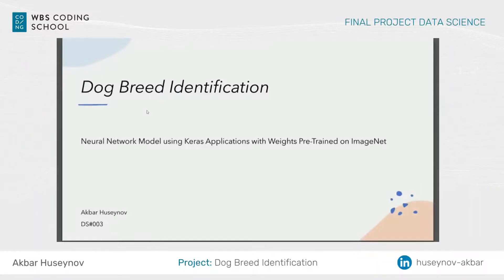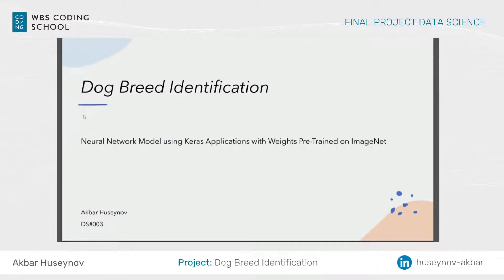My final project is a machine learning and image recognition project using convolutional neural networks. The idea behind it is by providing data to teach a machine to recognize anything on newly inputted images. For the project I chose to work on a Kaggle dataset for dog image recognition and created an app for easier use.